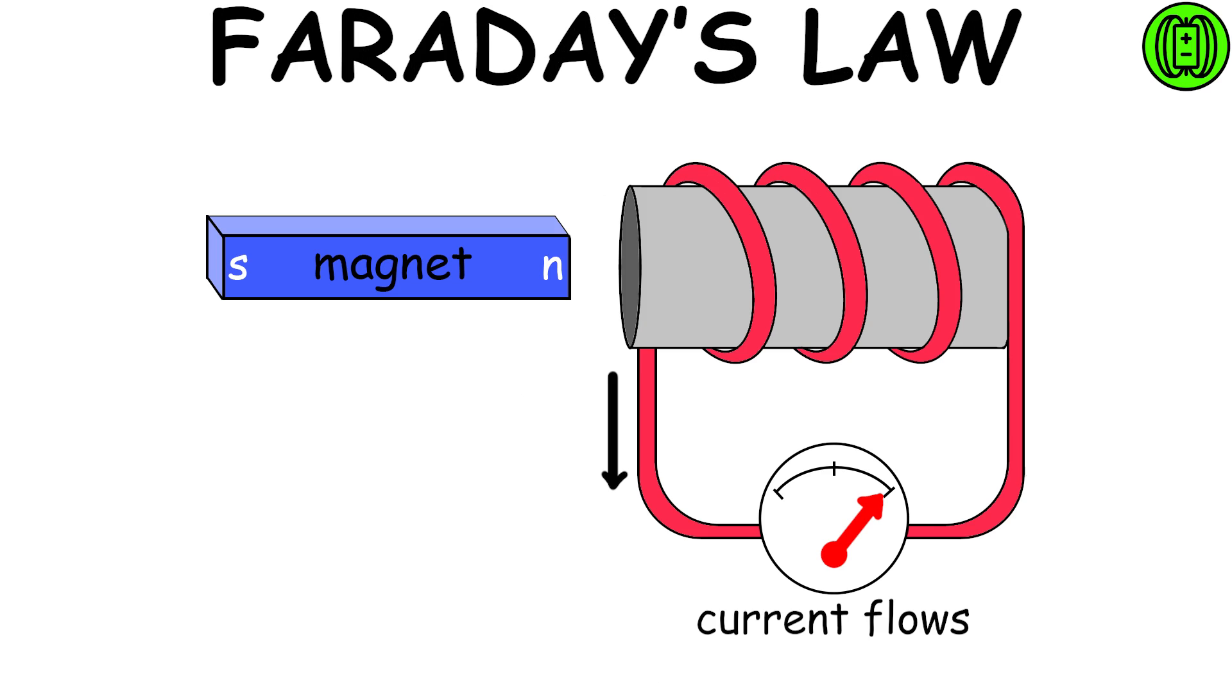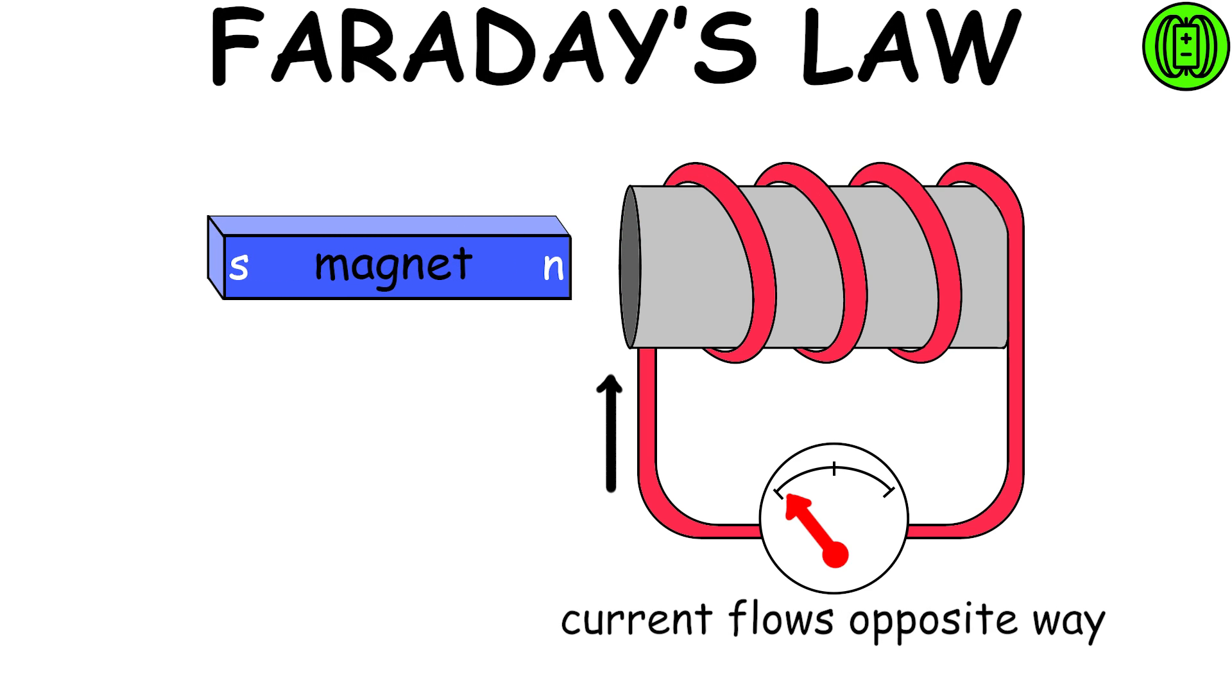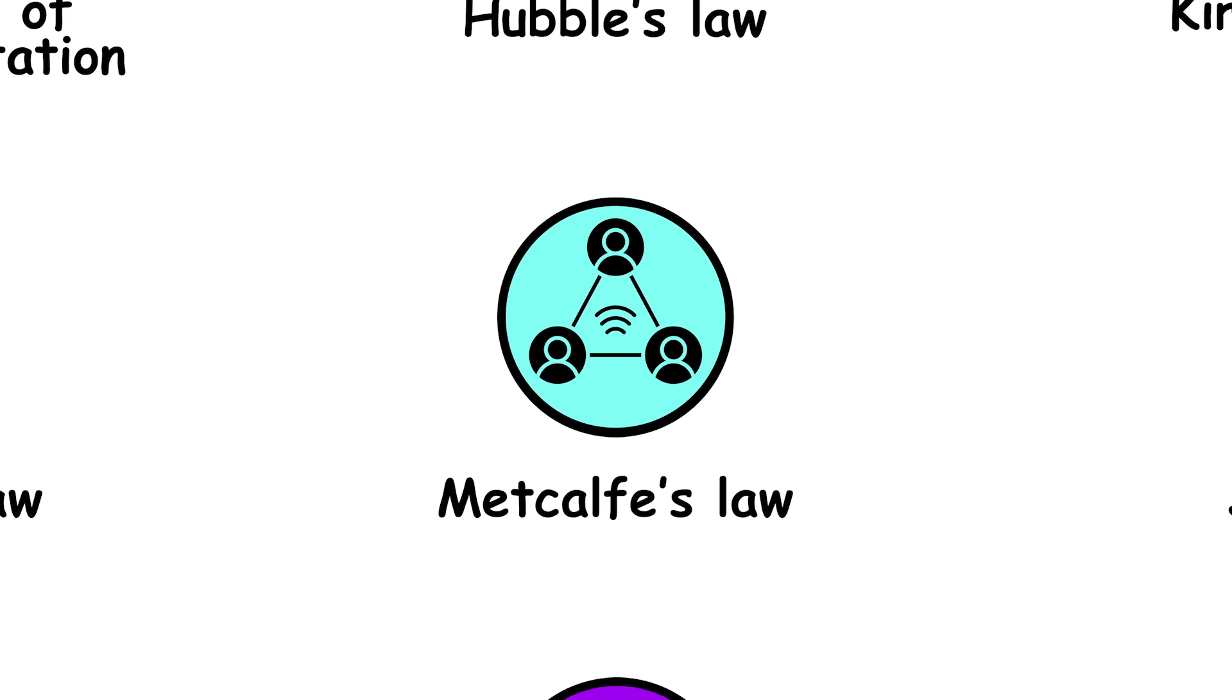Faraday's Law is a physical law that describes the phenomenon of electromagnetic induction, which occurs when the flow of the magnetic field through the surface delimited by an electric circuit is variable over time.